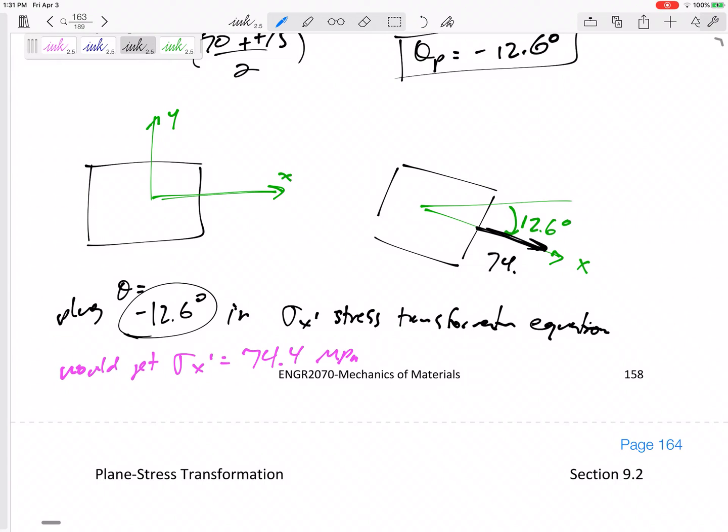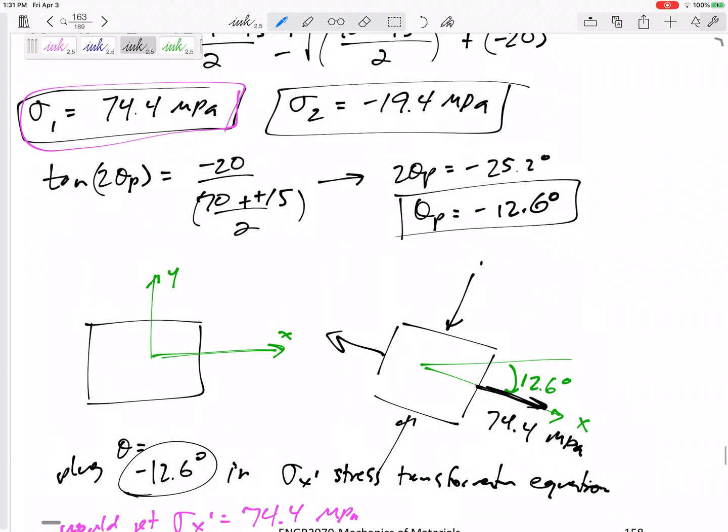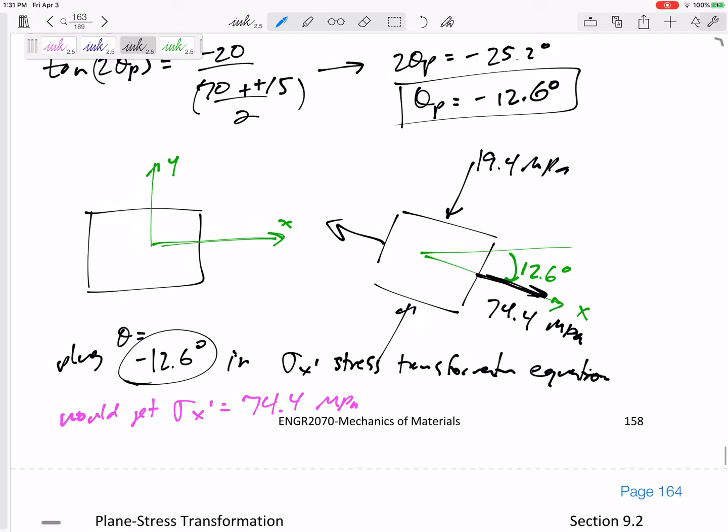So here we go. I've got—I'm drawing it back—I've got 74.4 MPa in tension. I've got 19.4 MPa in compression on that face. And do not draw any shear. Don't try to draw any shear. The shear stress at the principal orientation is zero. The shear stress at the principal orientation is zero.